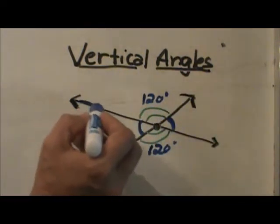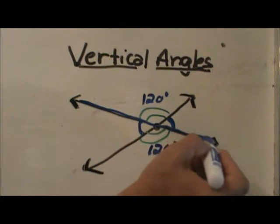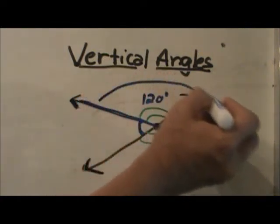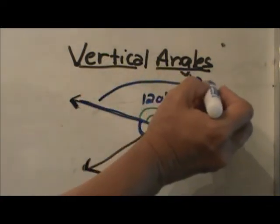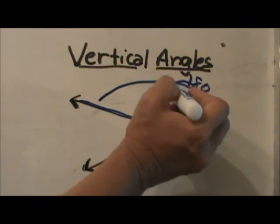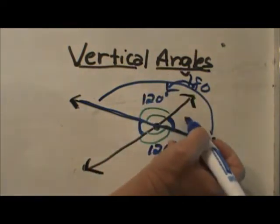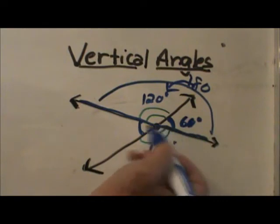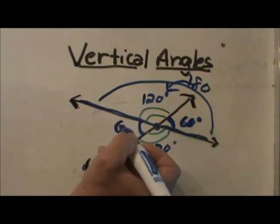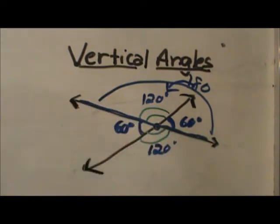Now if you will notice, this is a straight line. We know that lines add up to 180, so if 120 is here, that means we have 60 degrees left for this side, which means this vertical angle is also 60 degrees. That is how vertical angles work.